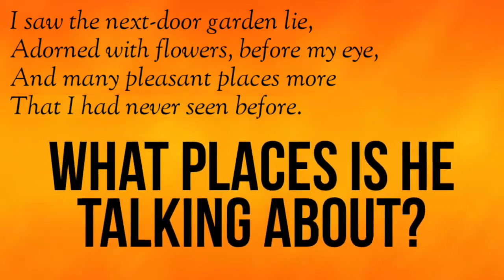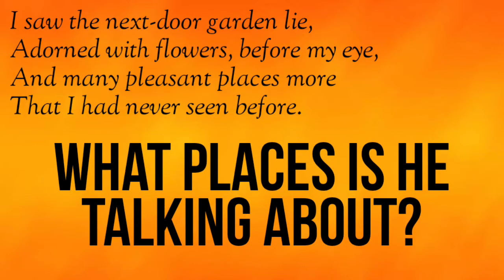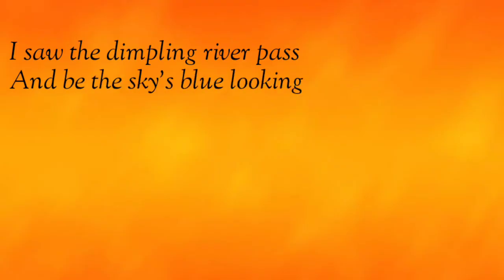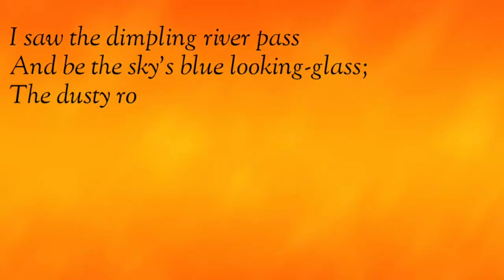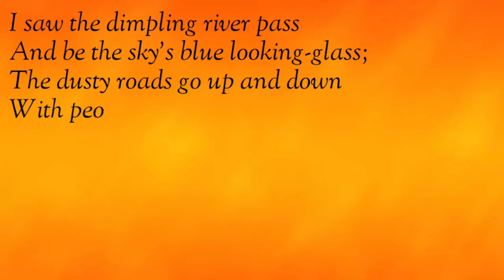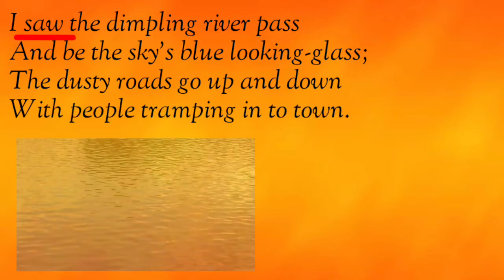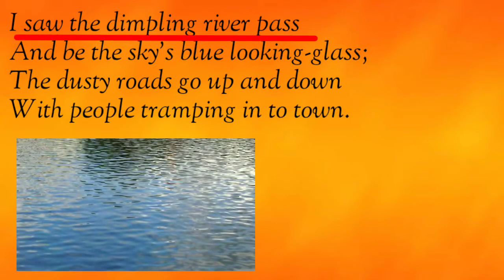What places is he talking about? For that, we will have to read stanza 3: 'I saw the dimpling river pass and be the sky's blue looking glass. The dusty roads go up and down with people tramping in the town.' Here, he sees the dimpling river passing by.